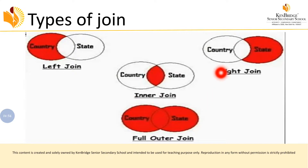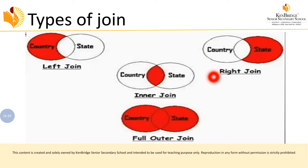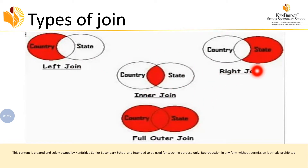For full outer join, both tables are combined together and all the attributes and values from both tables will be displayed in the result. That is called a full outer join. Through these pictures you can understand the concept easily. Now we will see each topic in detail along with the syntax.